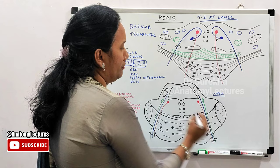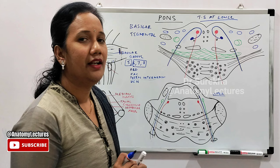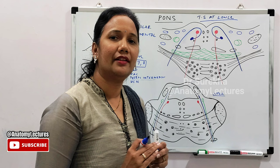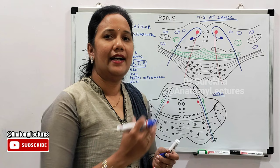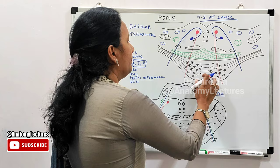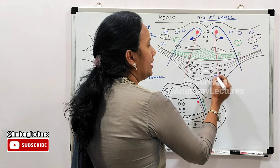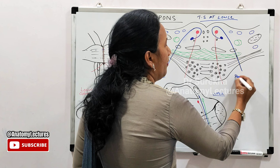In studying the transverse sections, we examine grey matter — all the nuclei — and white matter — the ascending and descending tracts. In the basilar part, the nuclei present are called pontine nuclei.